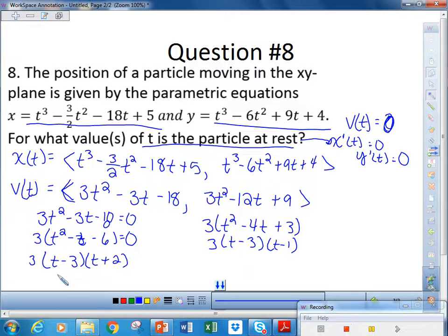So, the x component velocity is zero at 3 and negative 2. And here we get 3 and 1. But the particle is at rest when both the x coordinate and the y coordinate are zero. And that only happens at t equals 3 seconds.